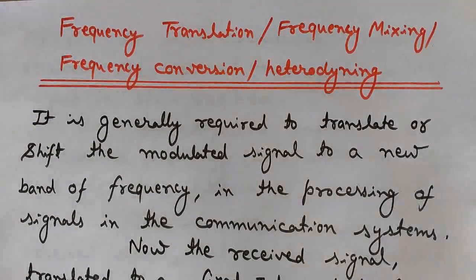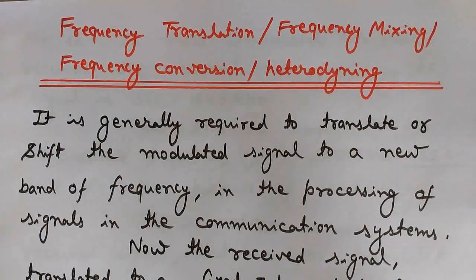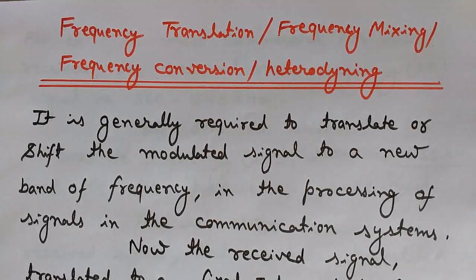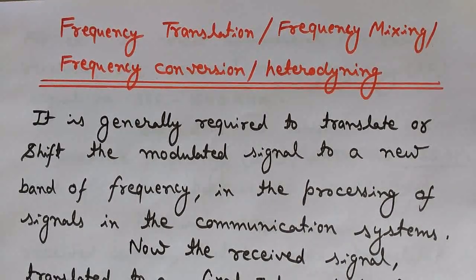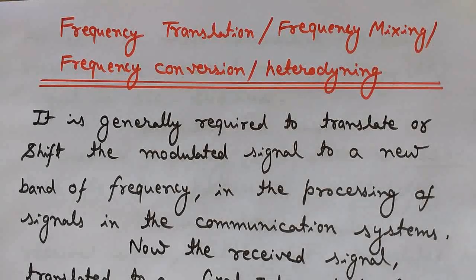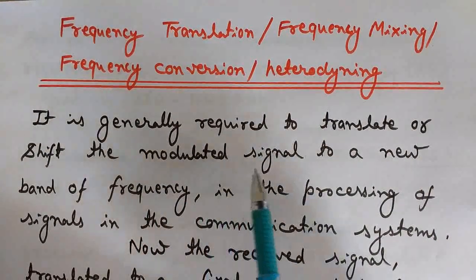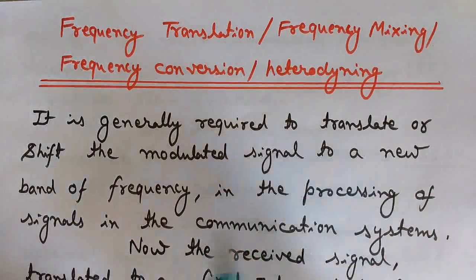What is the benefit of translating a frequency from one band to another? In communication systems, it is generally required to translate a modulated signal from one frequency to a new band of frequency before its demodulation. The frequency of the modulated signal is first translated to a new band, and then it is processed — because it becomes easier to perform operations like amplification and filtering, and then demodulation.